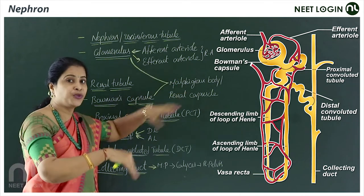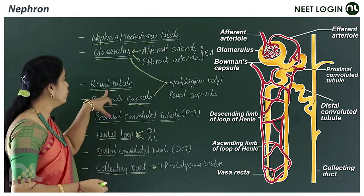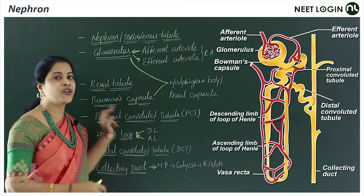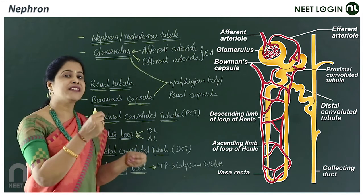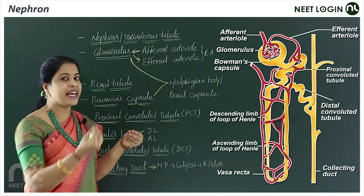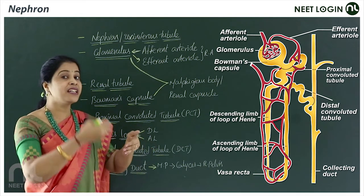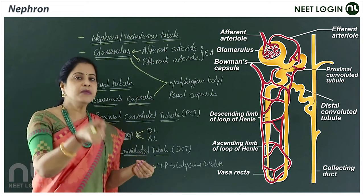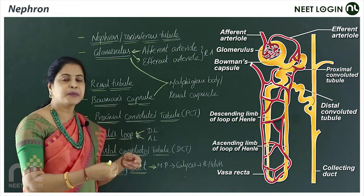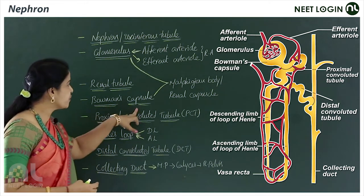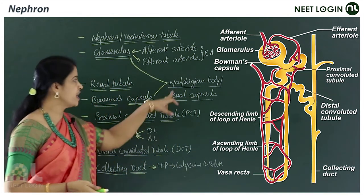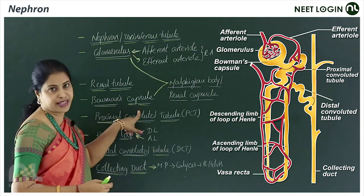The renal tubule starts with a double-walled, cup-like structure called Bowman's capsule, which is lined with simple squamous epithelium with podocytes (foot-shaped cells). The glomerulus capillaries are lined with simple squamous epithelium called endothelium. Together, the glomerulus and Bowman's capsule are called the Malpighian body or renal corpuscle.